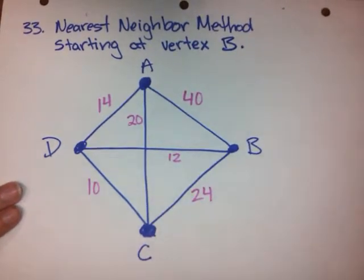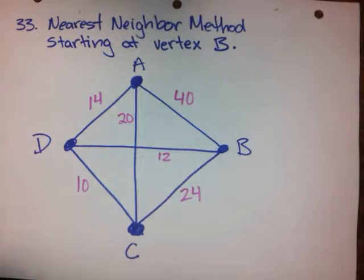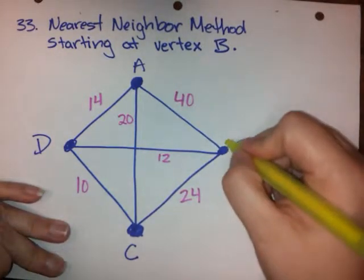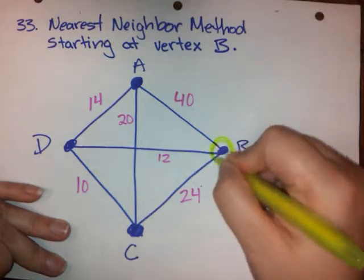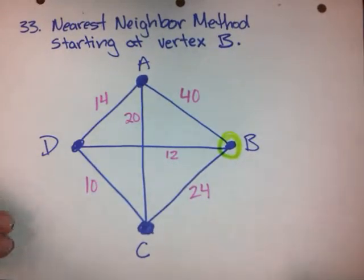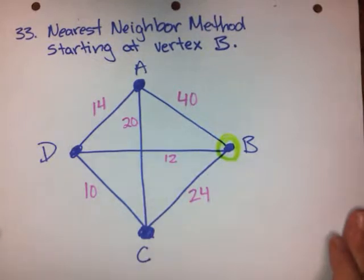So the nearest neighbor method, what that says is pick a starting vertex. So in this case, we start at B. So I'm going to start here at B. That also means I need to end at B. And nearest neighbor says pick the cheapest edge that you possibly can every step of the way. So if it is a valid step for you to take, and it is the cheapest valid step, that's the one that you have to take.